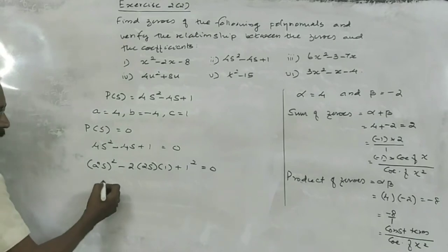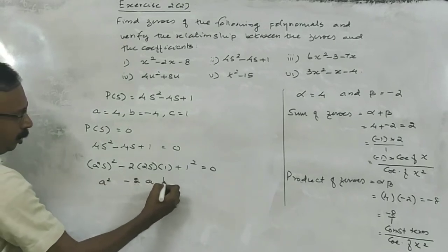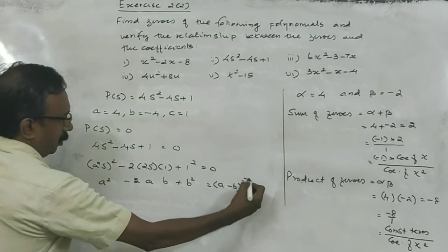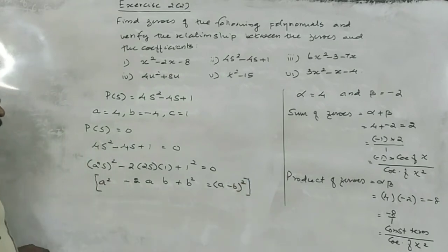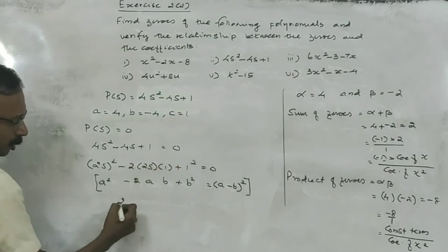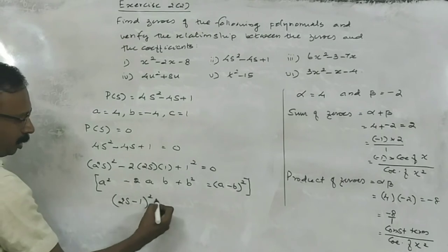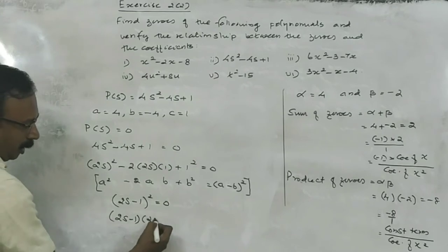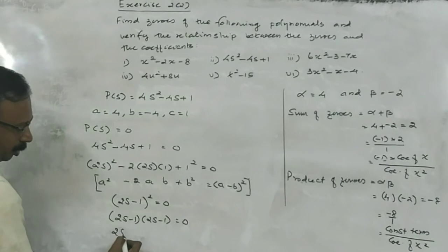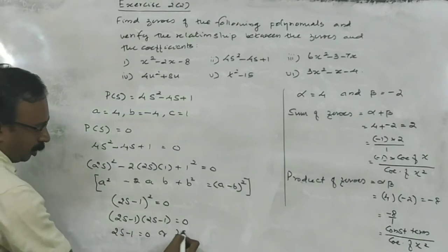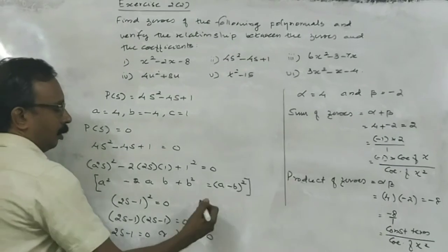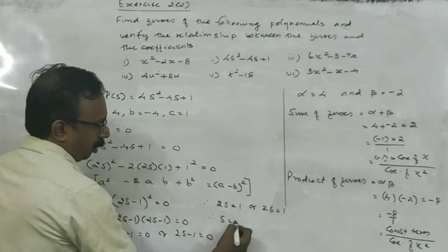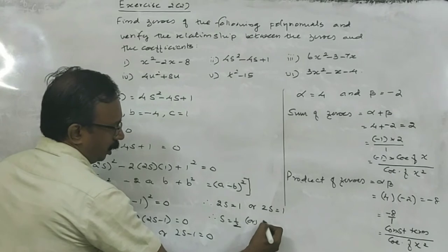It is in the standard form: A squared minus 2AB plus B squared, which is A minus B whole squared, isn't it? Therefore, it is in standard form, so it can be written as 2S minus 1, the whole squared, equal to 0. That is 2S minus 1 into 2S minus 1 equal to 0. So 2S minus 1 equals 0 or 2S minus 1 equals 0. Therefore S is equal to 1 by 2 or S is equal to 1 by 2.